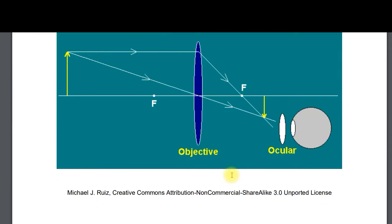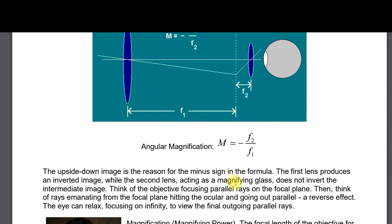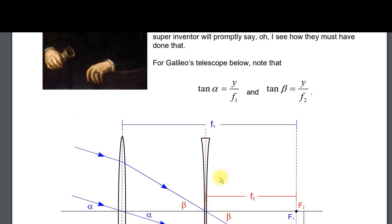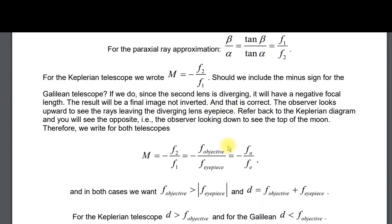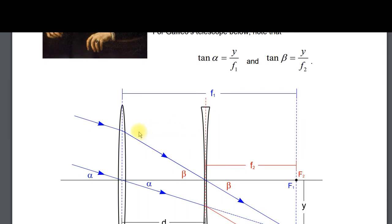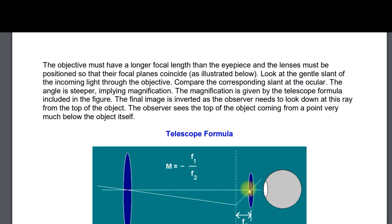For telescopes, know this formula: the focal length of the long objective divided by the short focal length, with a minus sign, gives the magnification. Notice that when you place the two elements, you add the focal lengths. For a Galilean telescope with a negative F2, you add F1 plus a negative F2, giving a shorter distance. For an astronomical telescope where both focal lengths are positive, you add them to get a longer tube length.